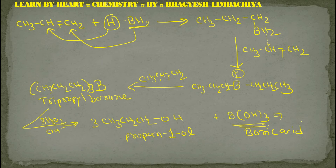Now let's see why Markovnikov's rule does not apply here, and how propan-1-ol is formed from tripropylborane. Tripropylborane has boron with three propyl groups (CH2CH2CH3) attached.